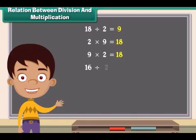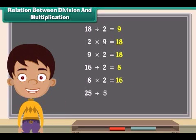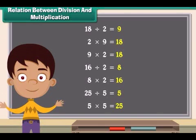16 divided by 2 is 8, and 2 times 8 is 16. Similarly, 25 divided by 5 is 5, and 5 times 5 is 25.